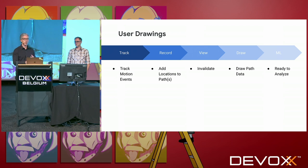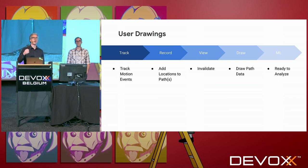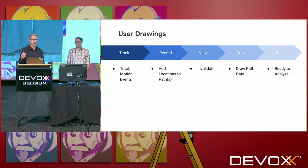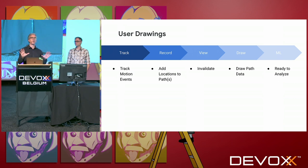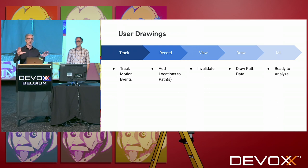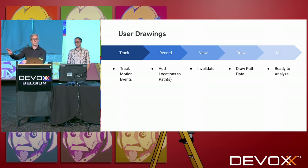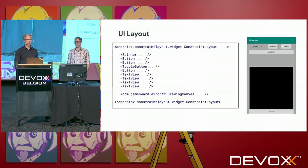Given the move, up, down, and move events on the phone, you can take that information. You need to add locations to this path, this geometry object. You can invalidate, which tells Android this view needs to be redrawn now. And then the view is going to be redrawn with the new path data. And then you're ready to analyze. This is just all the basic geometry and drawing stuff that's going on.